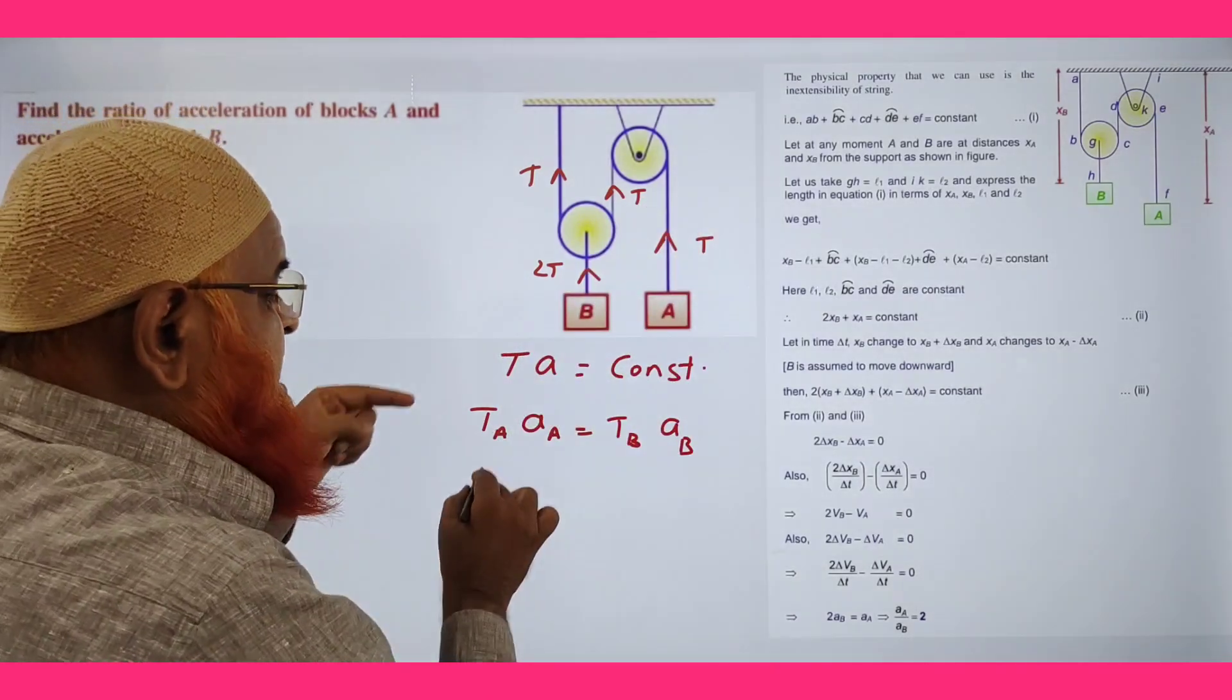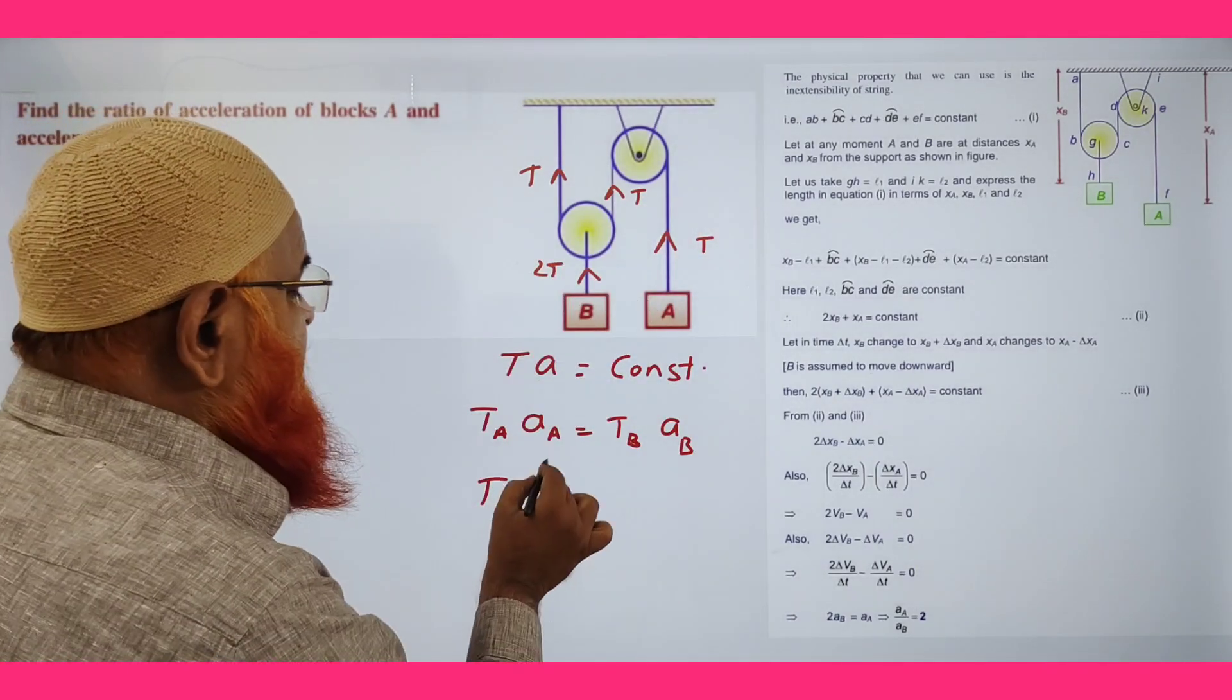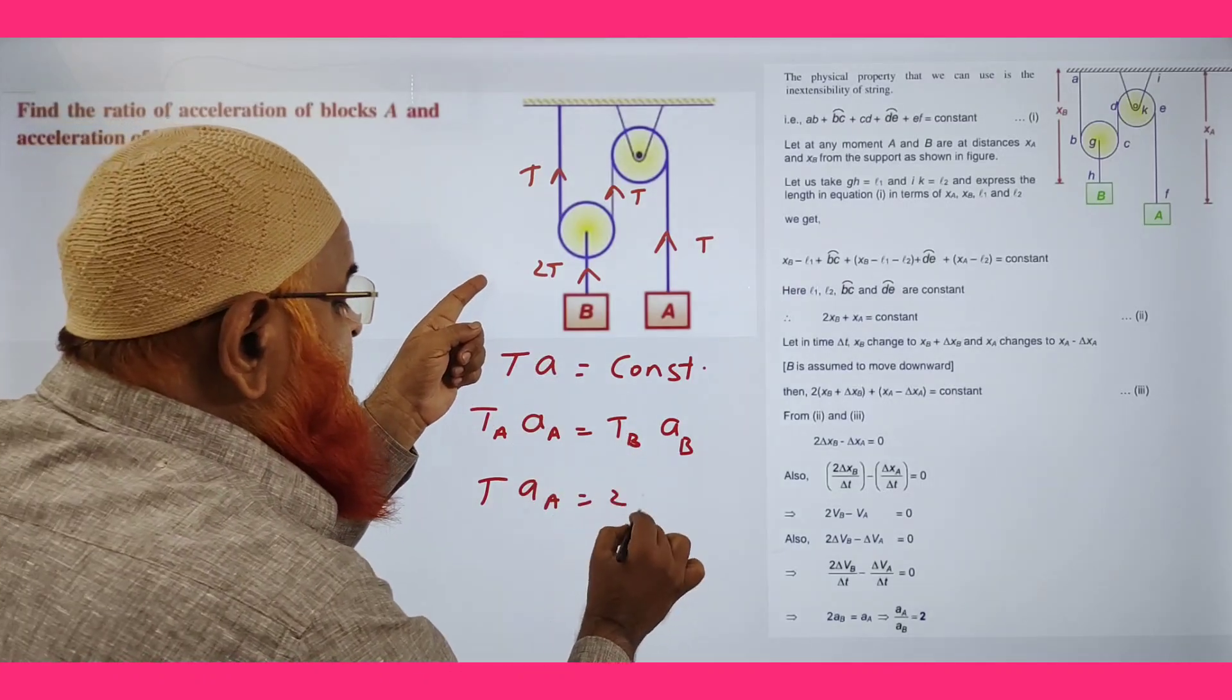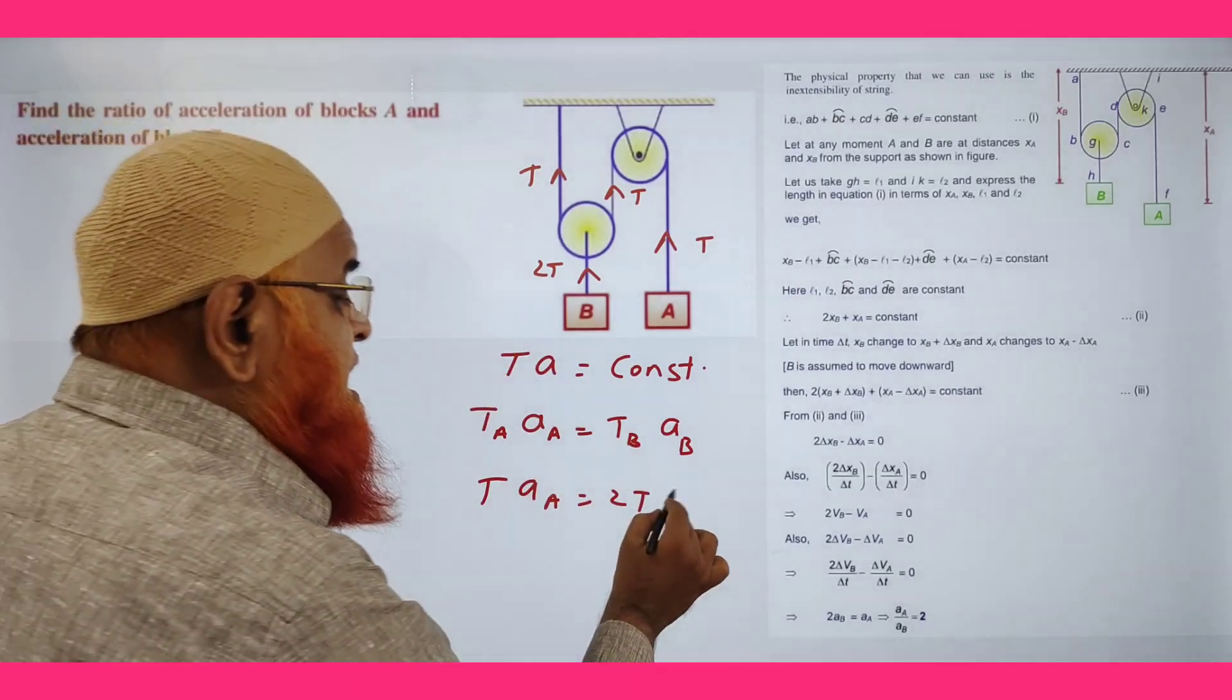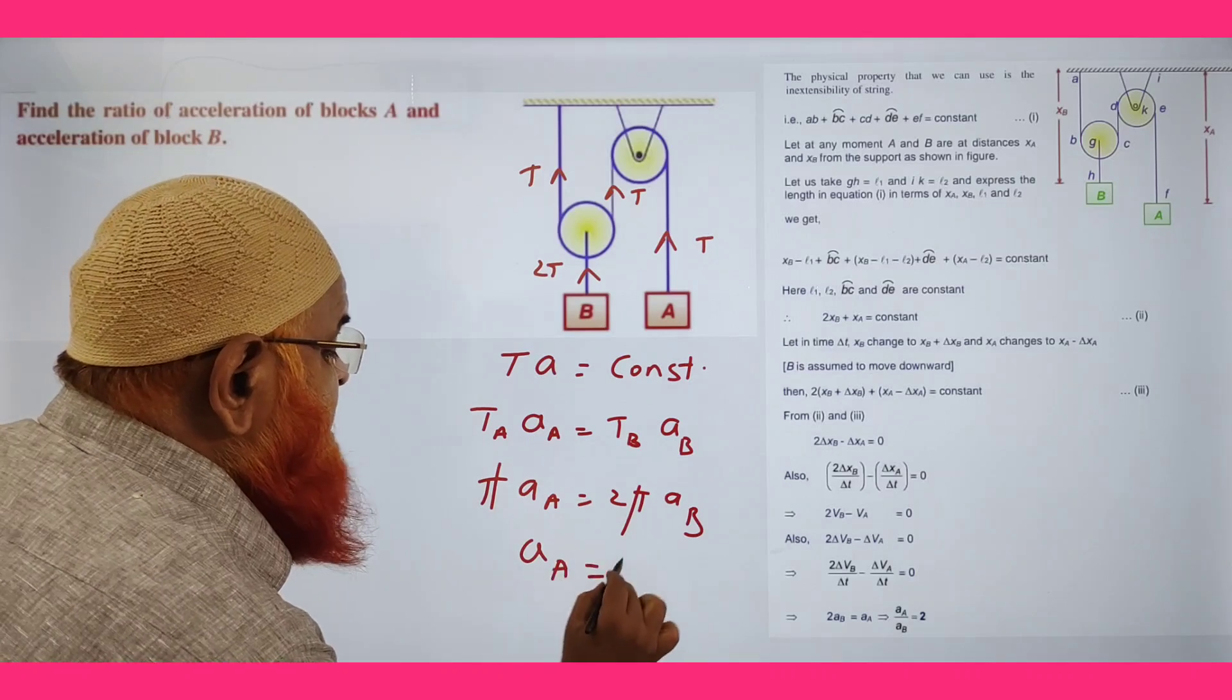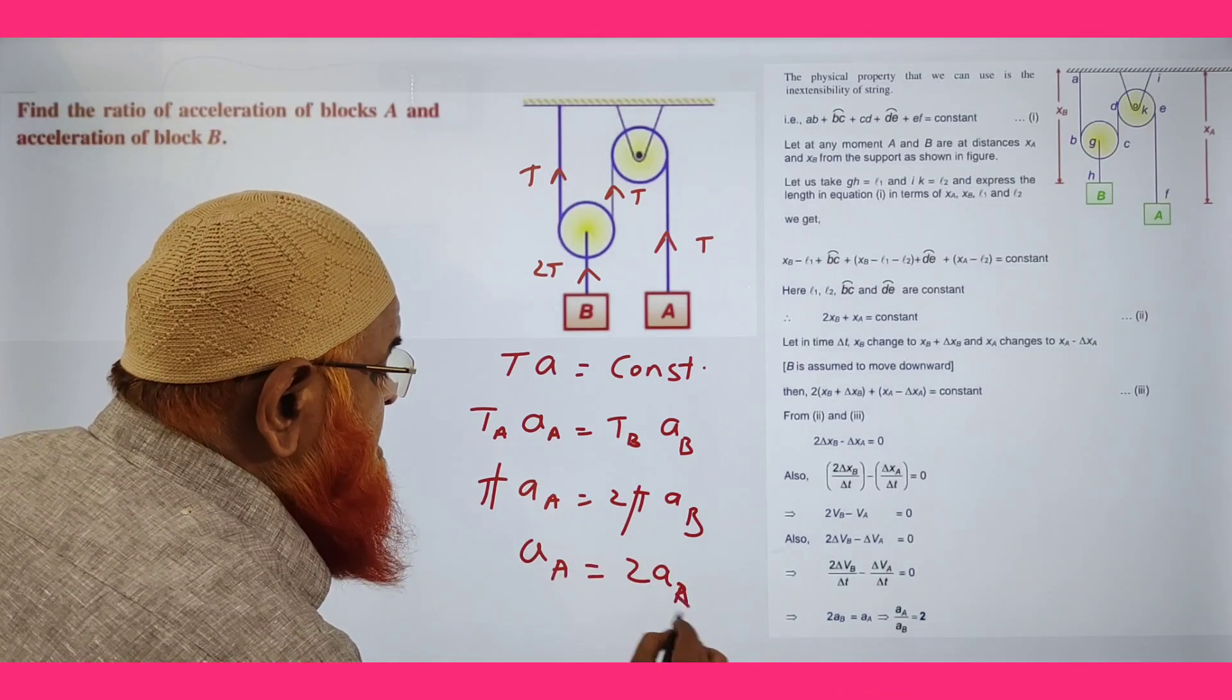TA, tension at A is T, acceleration at A is AA, tension at B is 2T. Acceleration at B is AB. T gets cancelled. Acceleration A equals 2 times acceleration B, that's it.